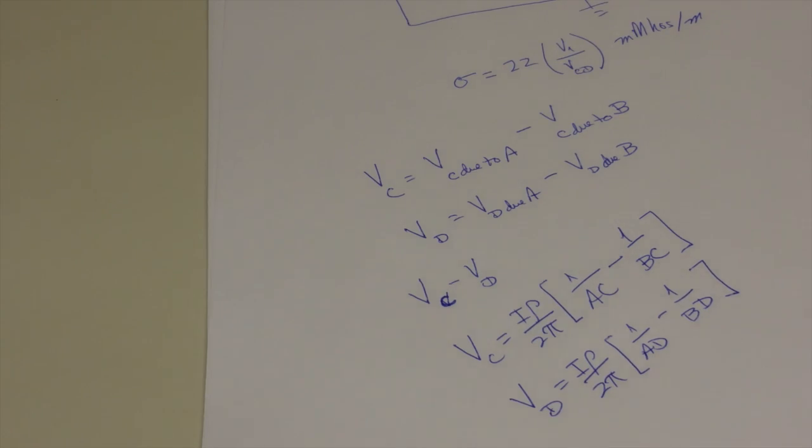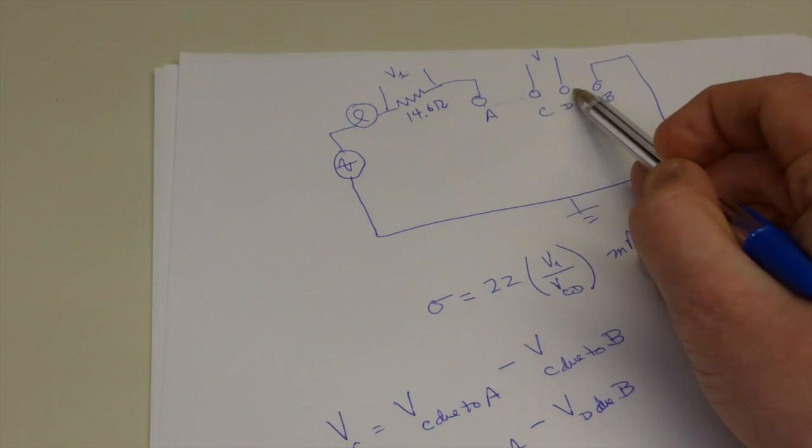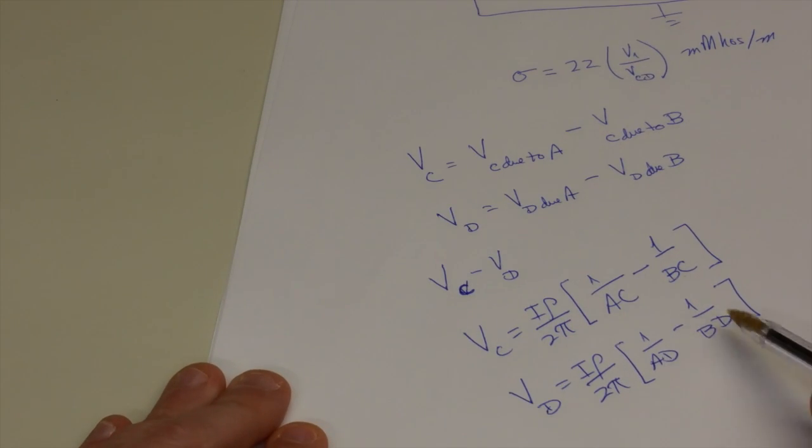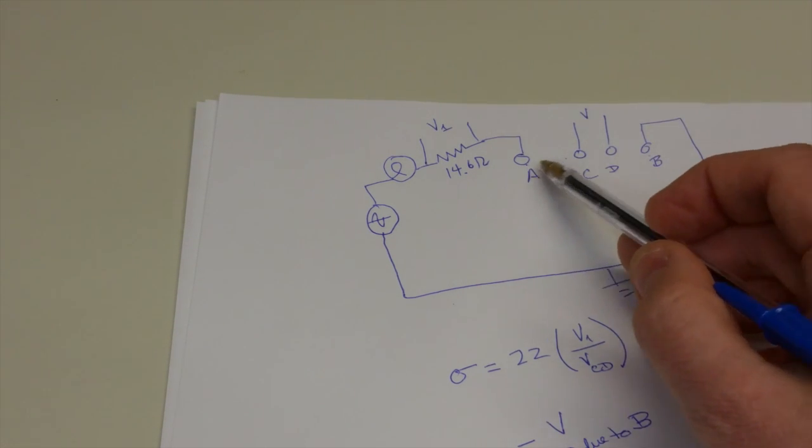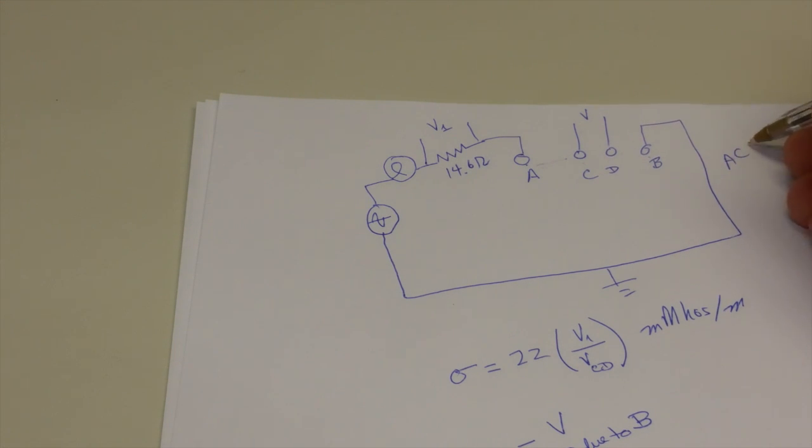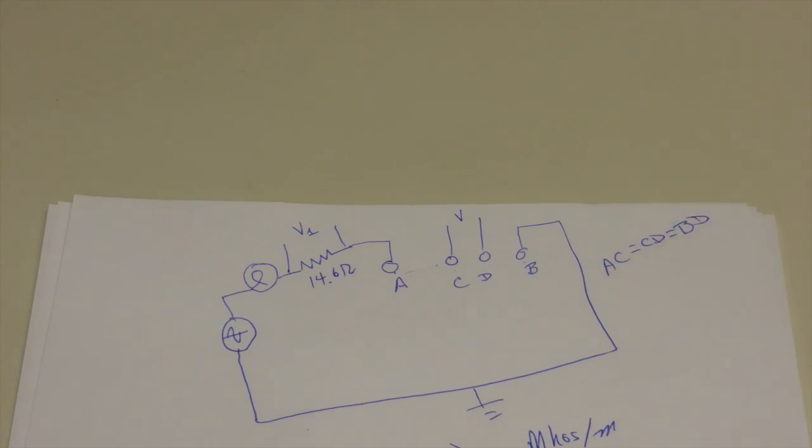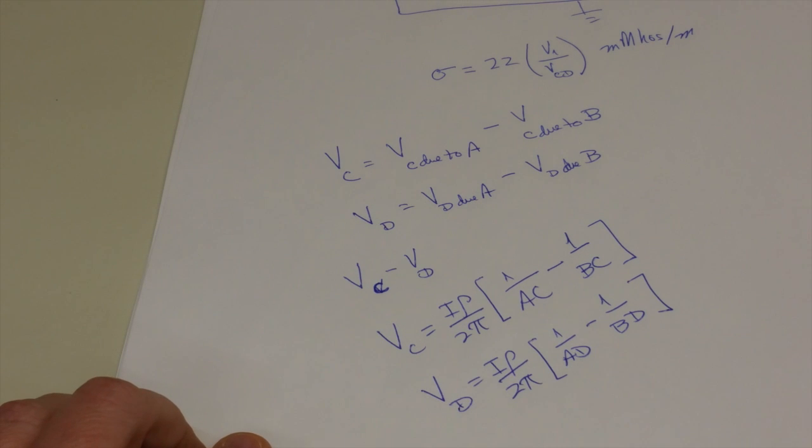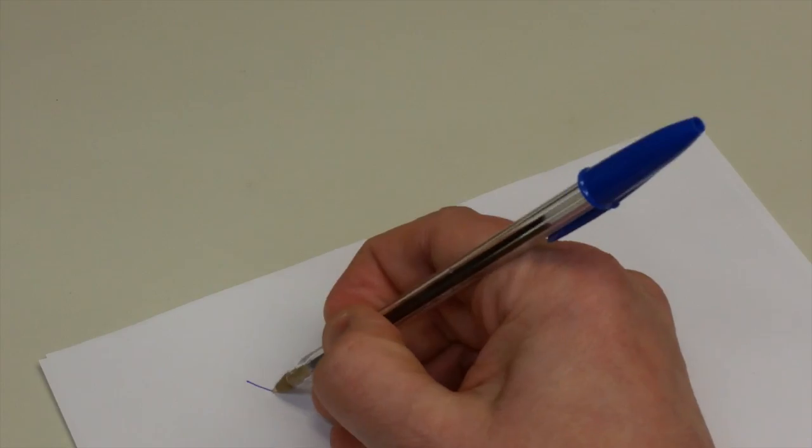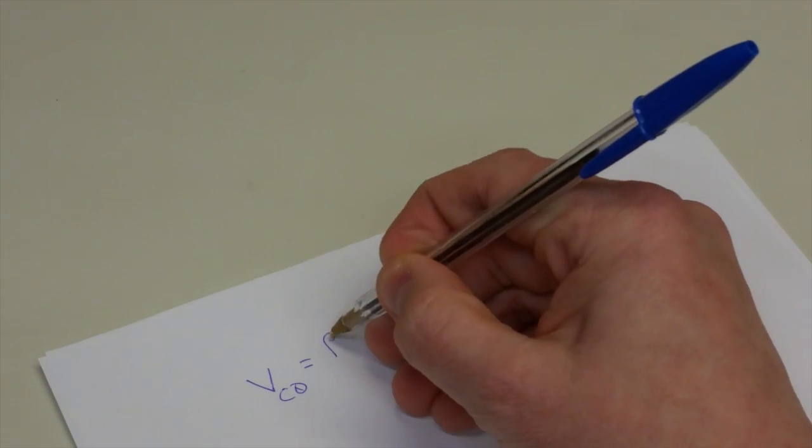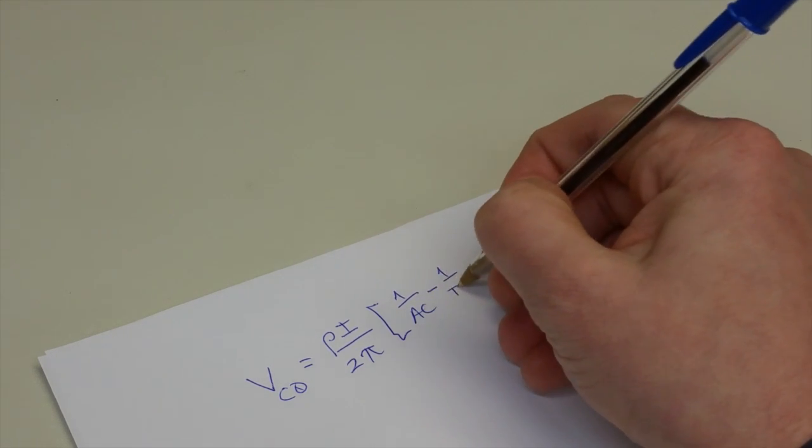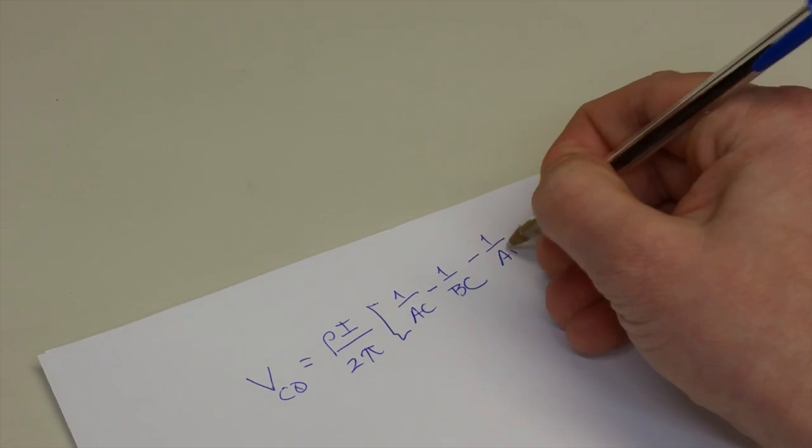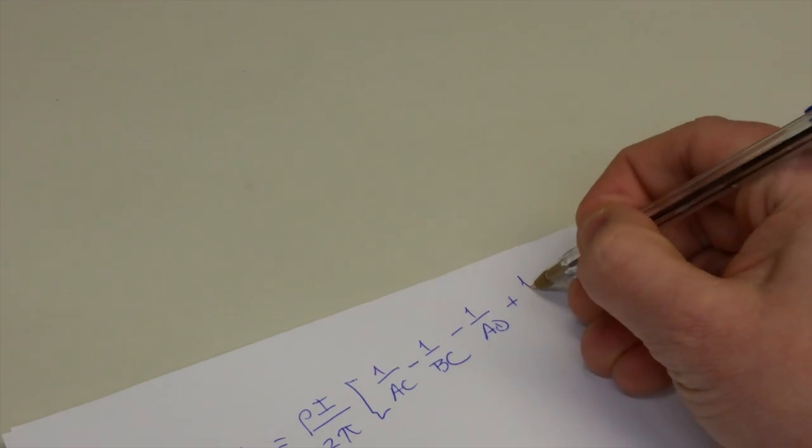We have our expressions now for the potential at each point in the circuit C and D. We can compute what AD, BD, AC, and BC are. Those are experimental parameters that we can control. In this experiment, AC is equal to CD is equal to BD, and they're all equal to 18 inches. So we have everything that we need now to simplify the expression for the potential difference between points C and D. We find that VCD is equal to rho I over 2 pi, and then we have 1 over AC minus 1 over BC minus 1 over AD, and then we have a plus 1 over BD.